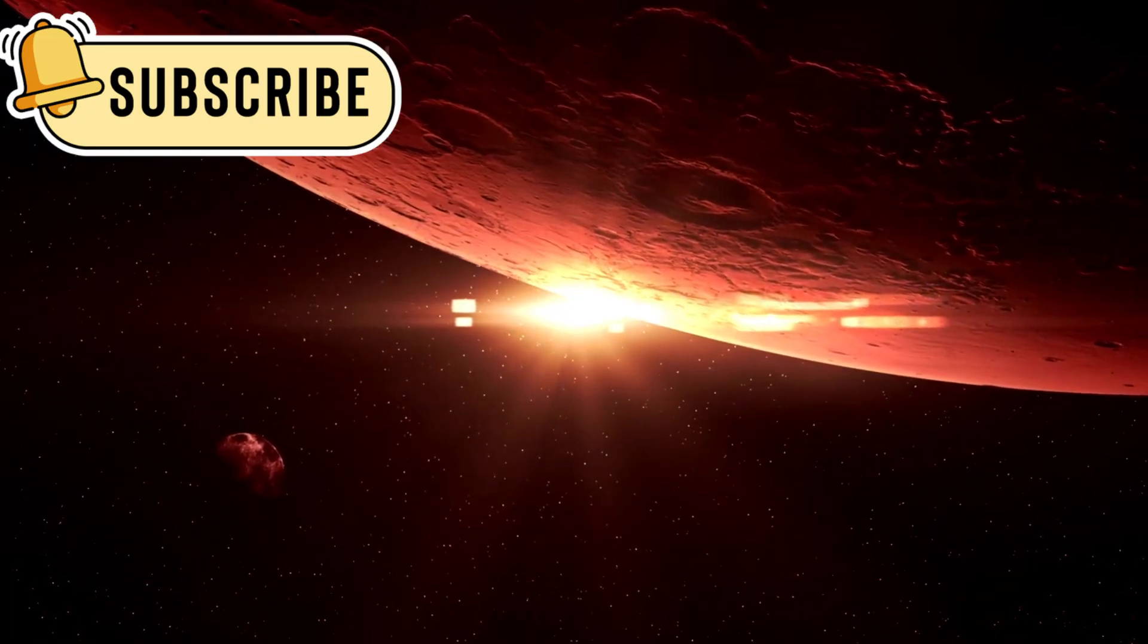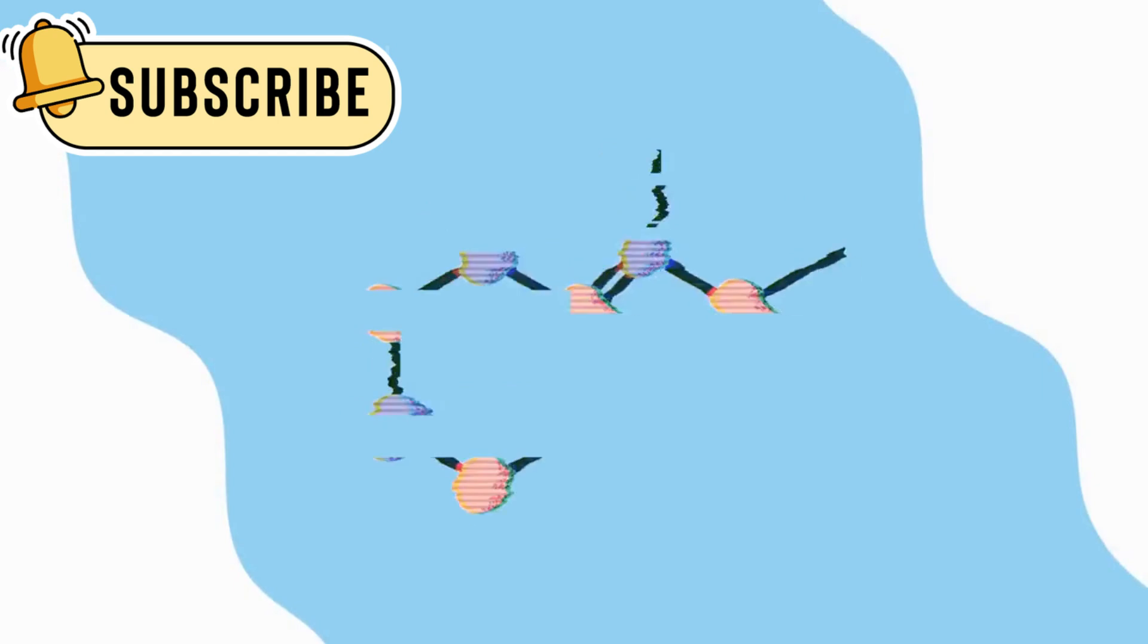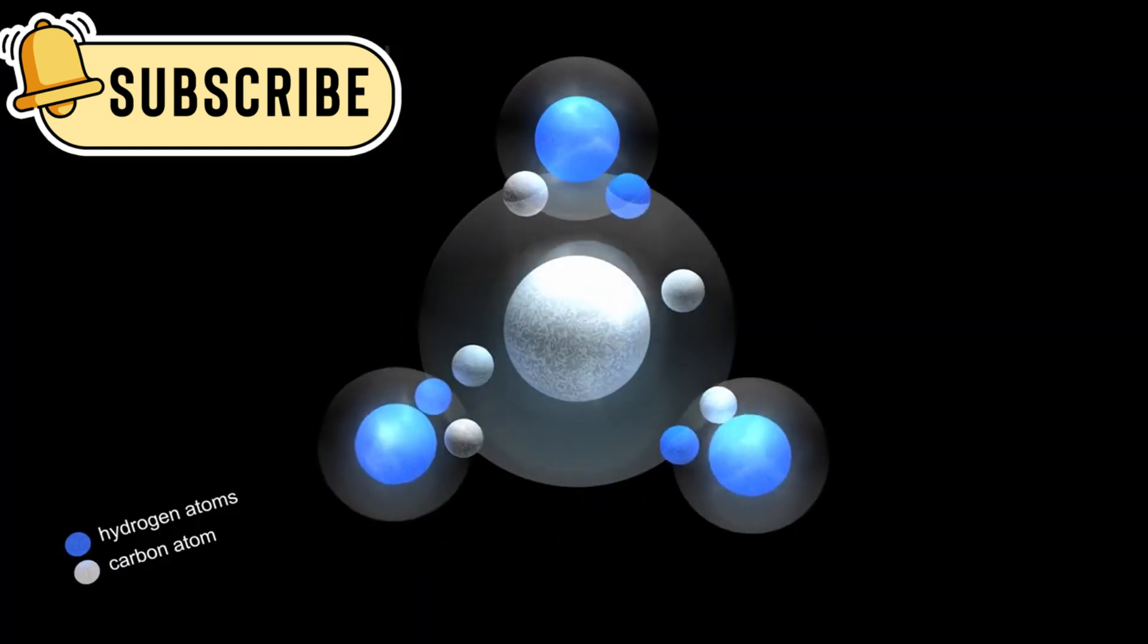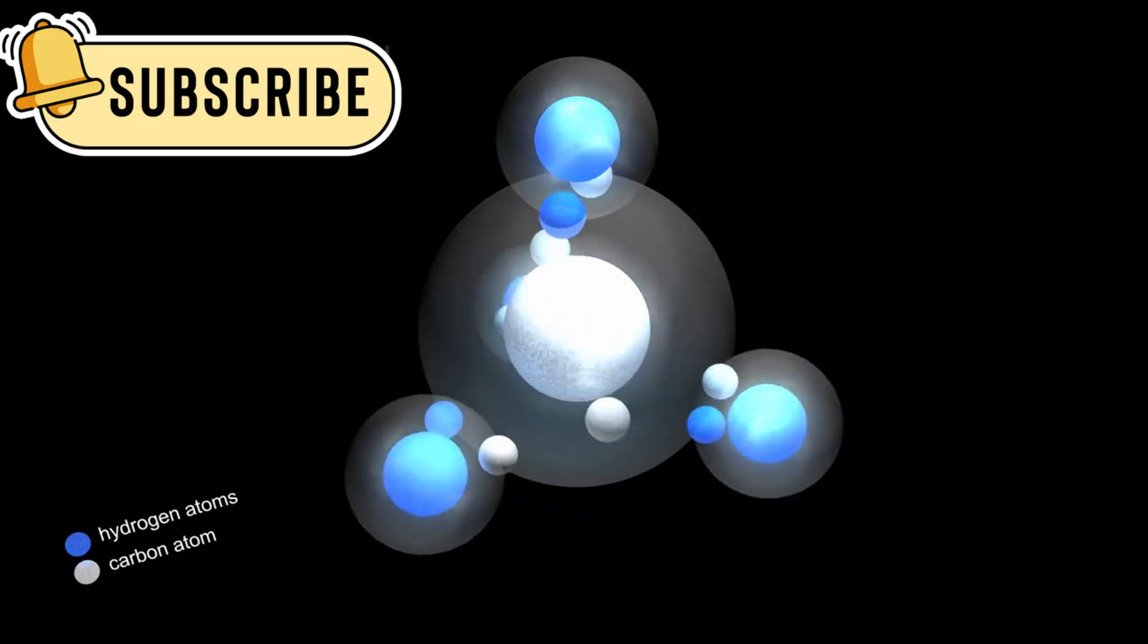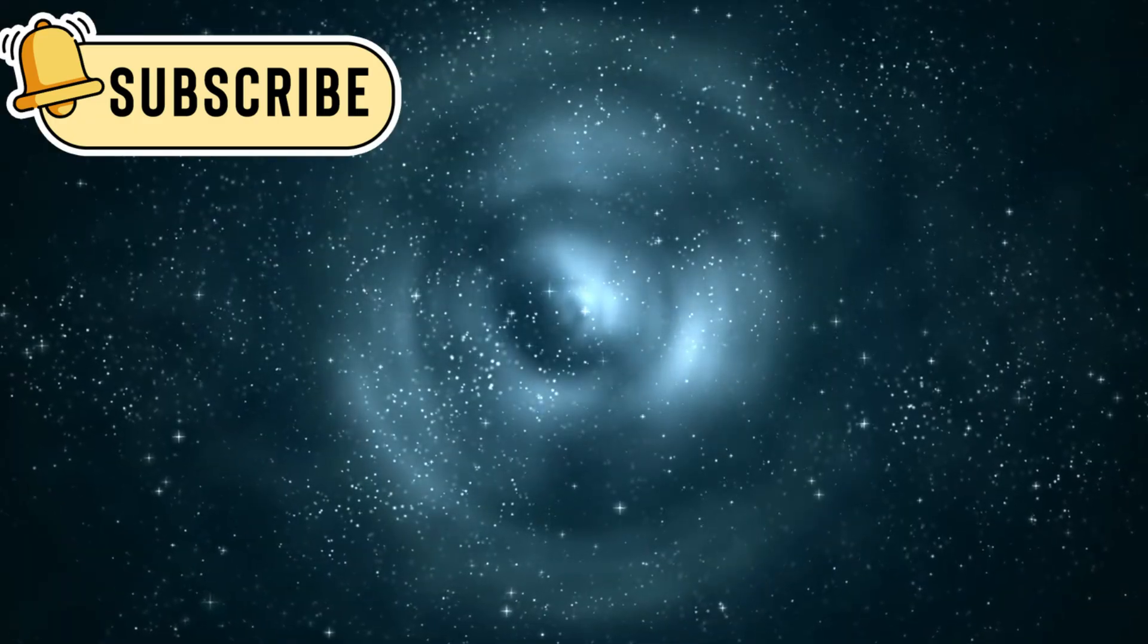Another surprising discovery is the reddish material on Pluto and Charon. These areas are rich in tholines, which are complex organic molecules. Tholines are made when sunlight hits methane gas, causing chemical changes. They may be an early step in forming life.